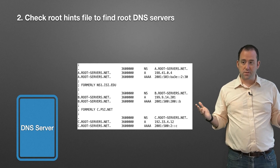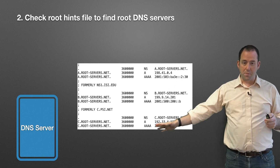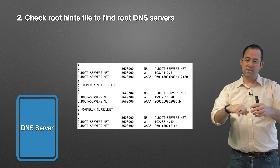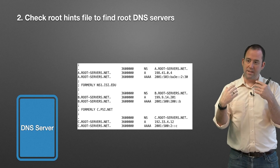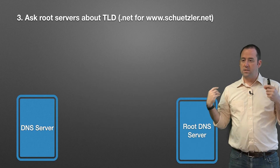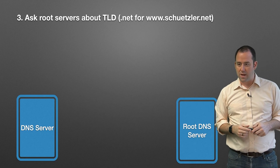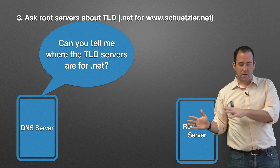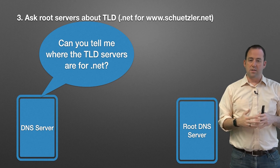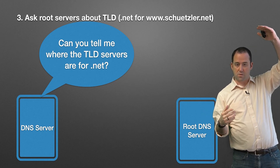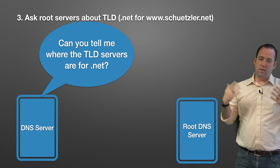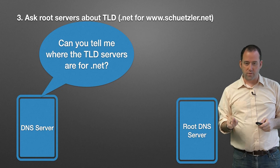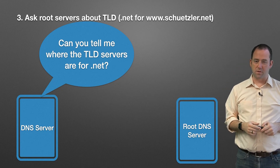Now that we have the IP addresses of those root DNS servers — remember, this is the DNS server doing this job, the DNS server that our computer talked to — the DNS server is now resolving. It knows where the root servers are, so now it's going to ask the root name servers: can you tell me where the top level domain servers are for .NET? Because we're resolving www.schetzler.net, and the next level down from the root is the top level domain .NET.